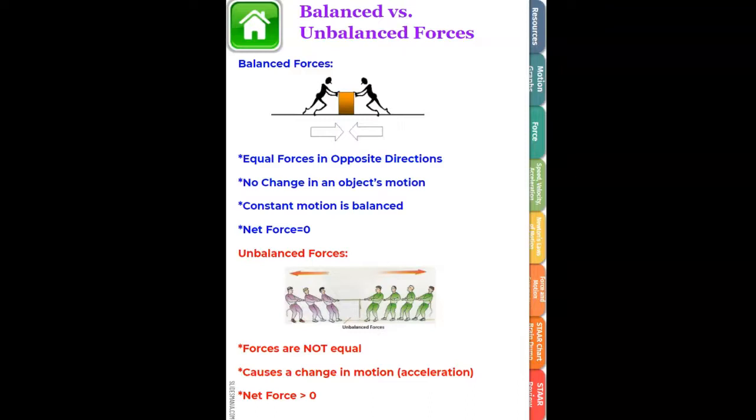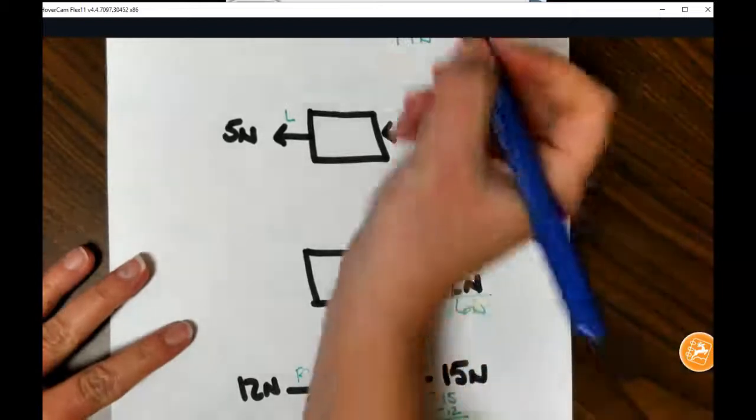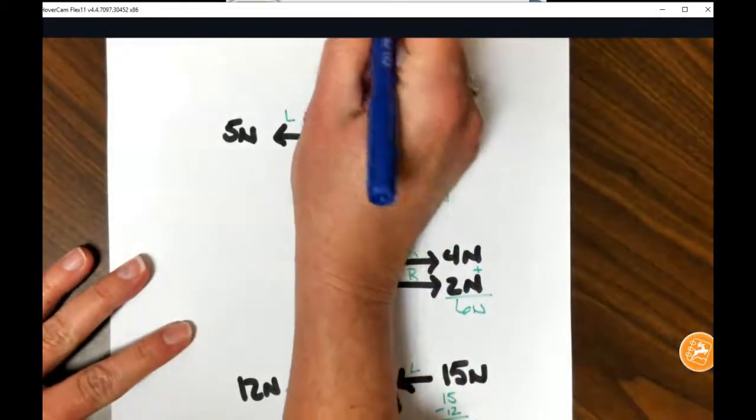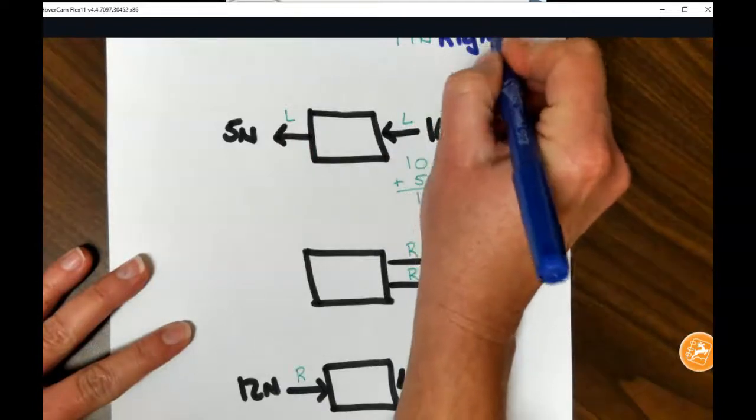So let's take a look back at our examples and see what would happen. So if we look at this first one, we have 17 newtons. The force is greatest going to the right, so the object would travel to the right.